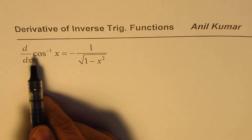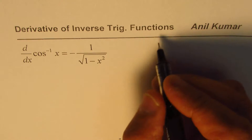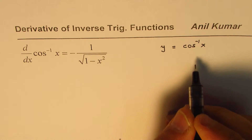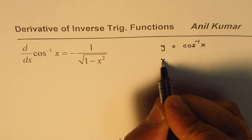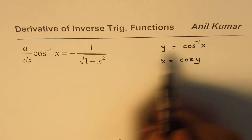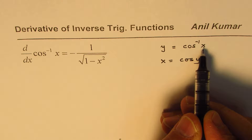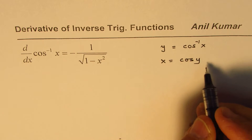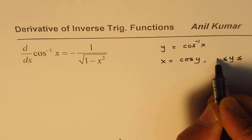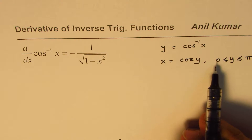Let's first try to understand the cos inverse x function itself. Let us say that y equals to cos inverse x. Then we can write this as x equals to cos of y. Whenever you have this inverse function, cos inverse x is referring to the angle in radians, and it is defined in the interval 0 to pi.